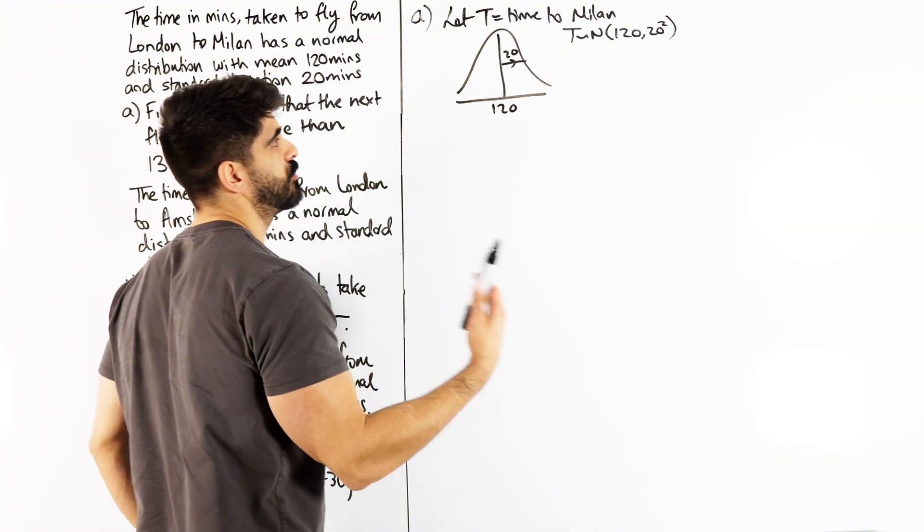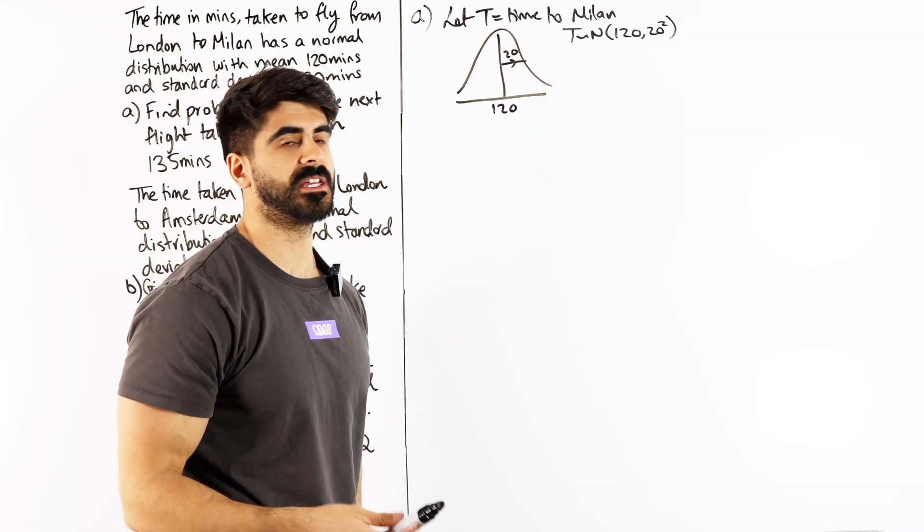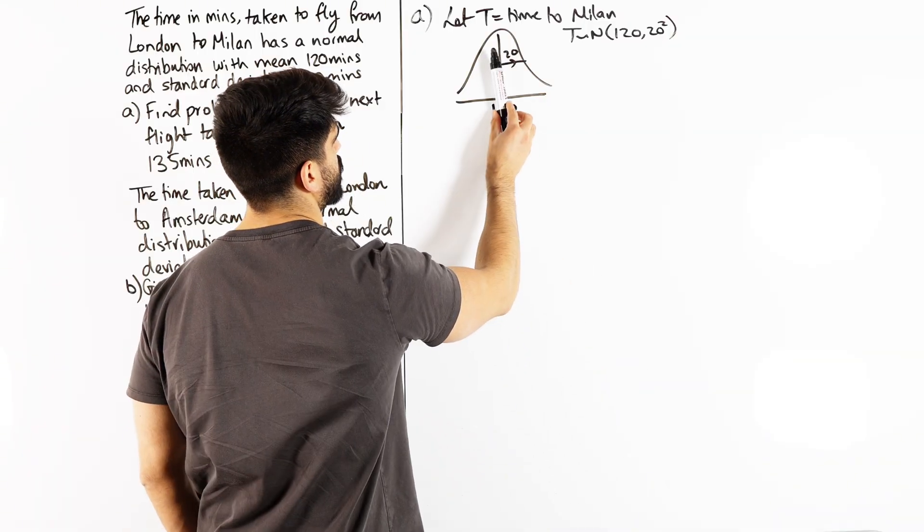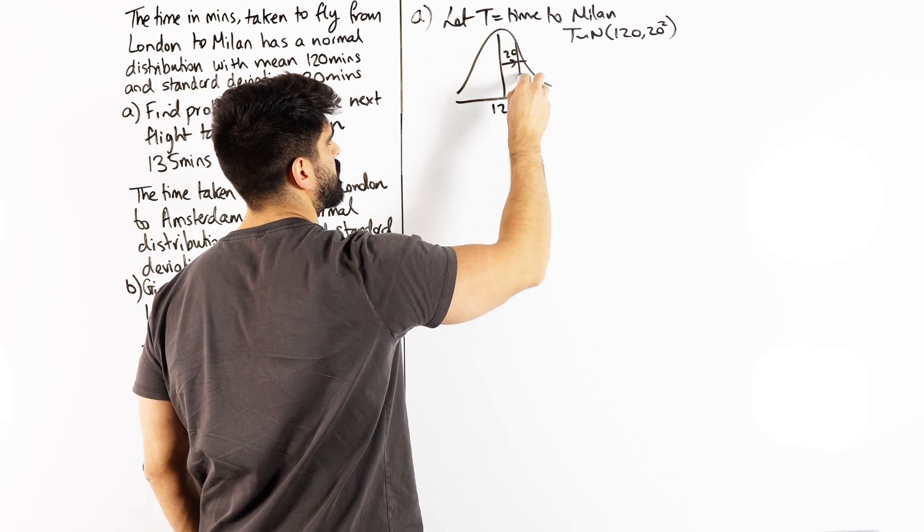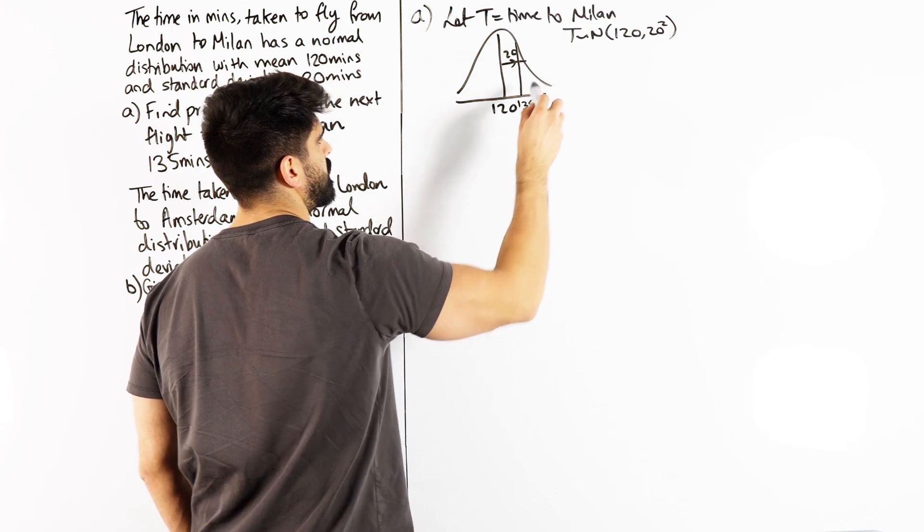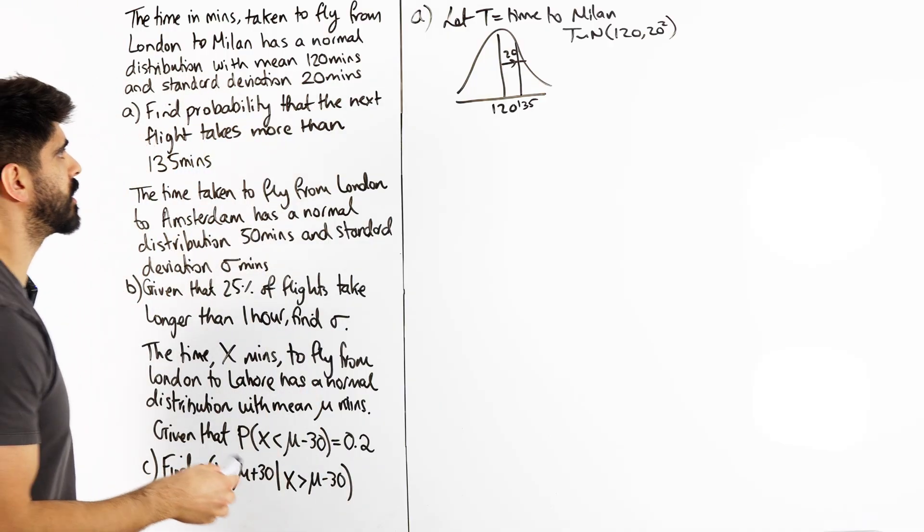Now positioning is not super important, but it can give you a good idea if you're on the right line. So if that's 20, 20 this way, that's going to be 140. So somewhere a bit below, 135. They want the probability of more than that.